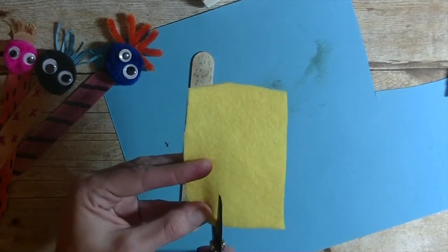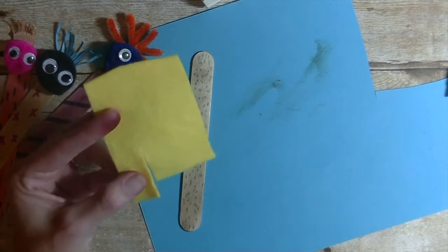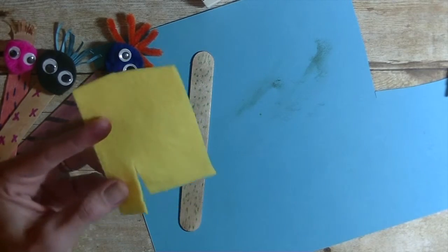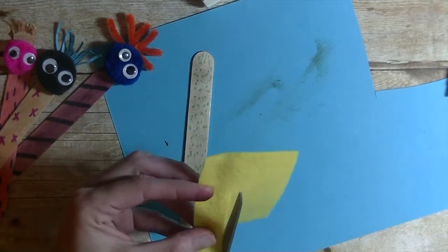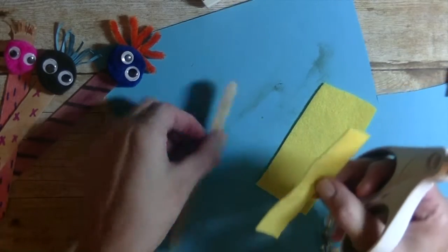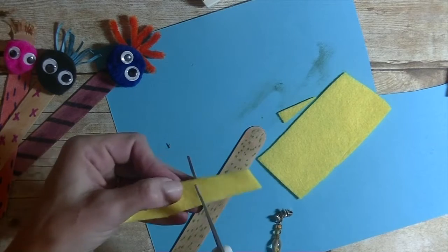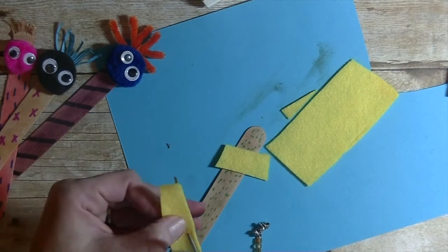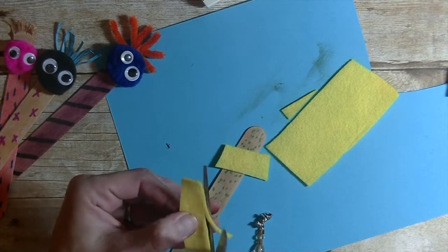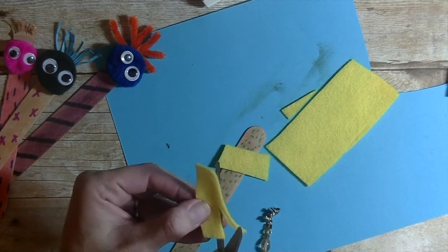This one we're going to go ahead and use some felt. Just go ahead and cut. And grab some sharper scissors over here. Just make sure it fits your popsicle stick. It's too wide. Go ahead and trim it. And we're just going to go ahead and cut some slices in it to look like hair.